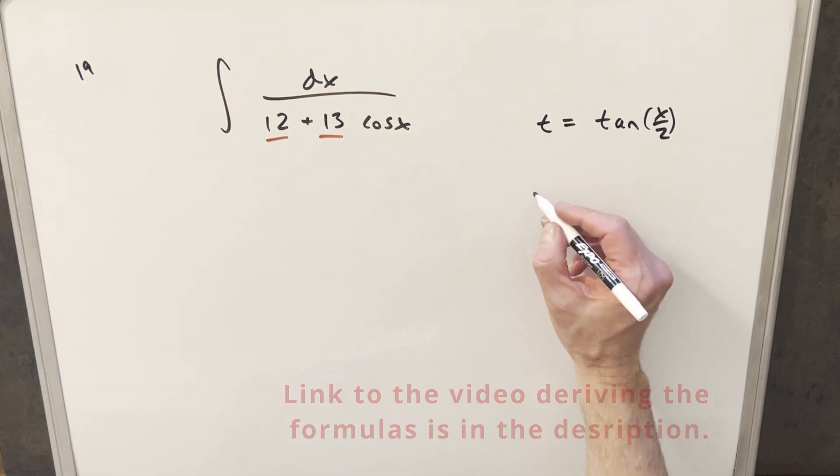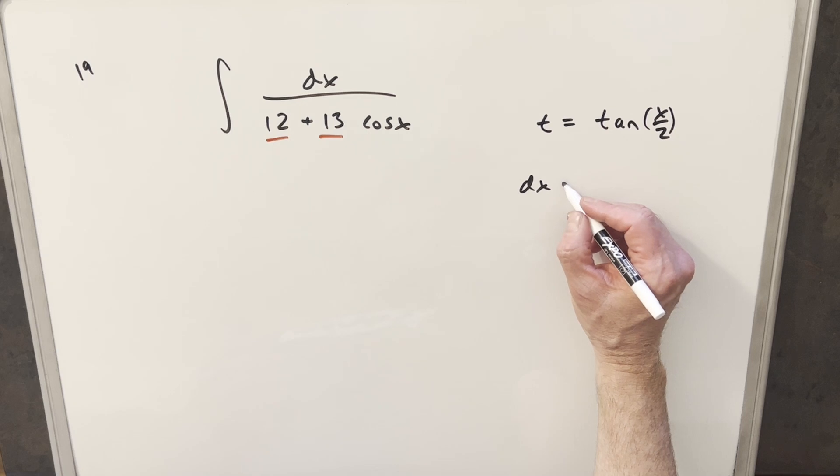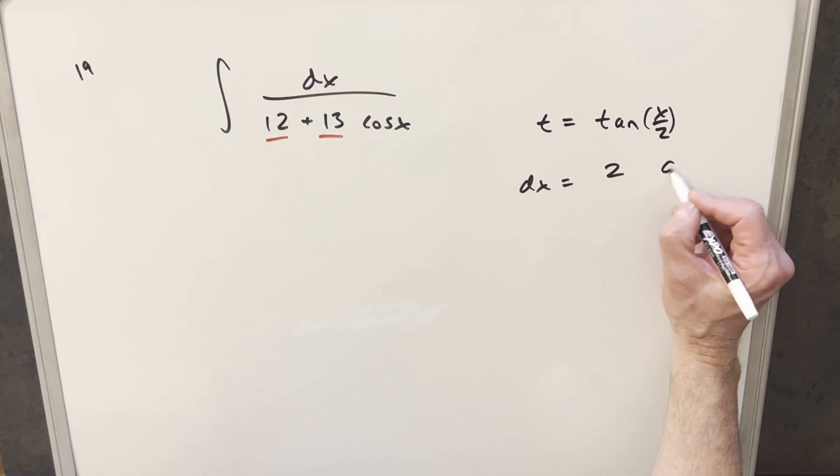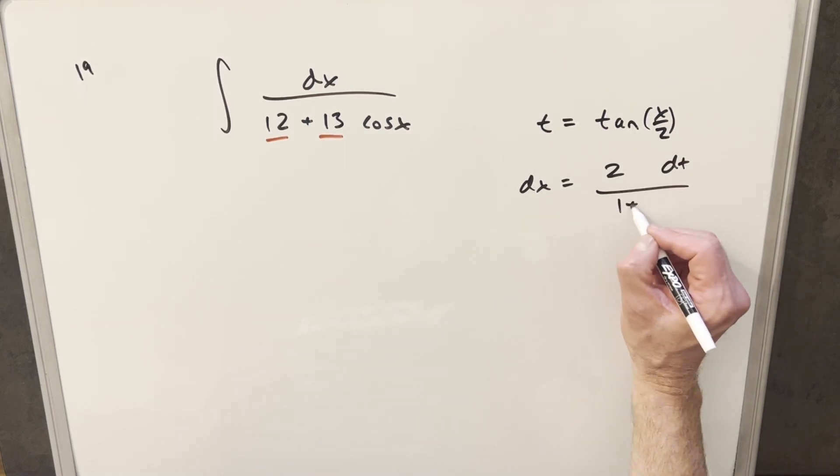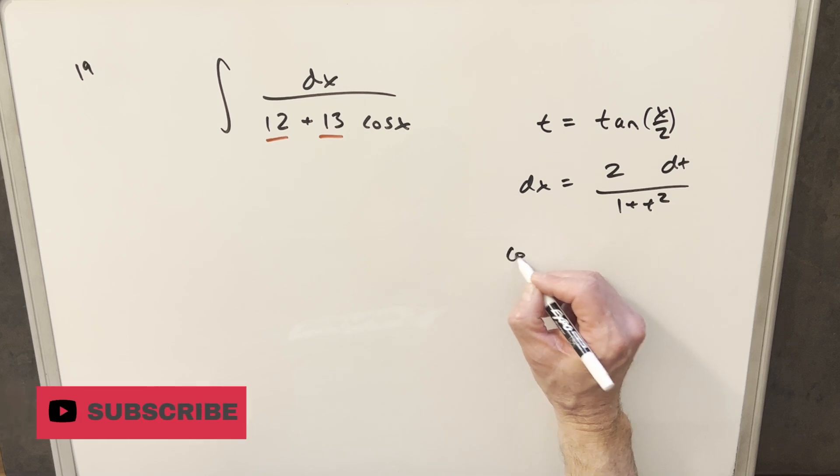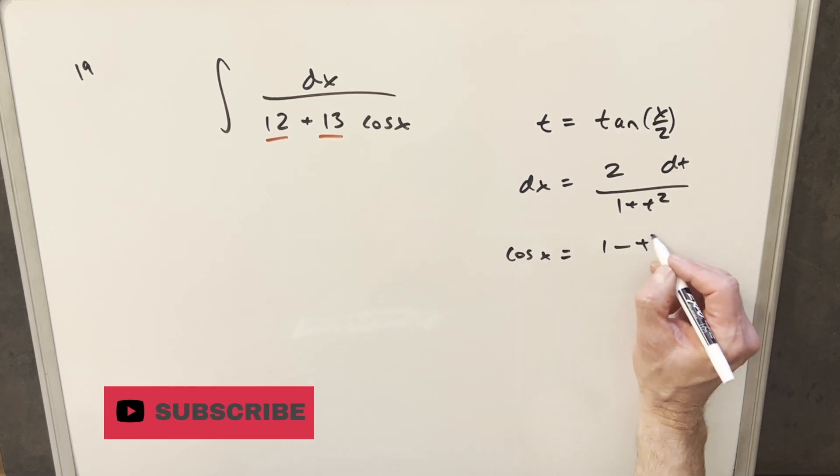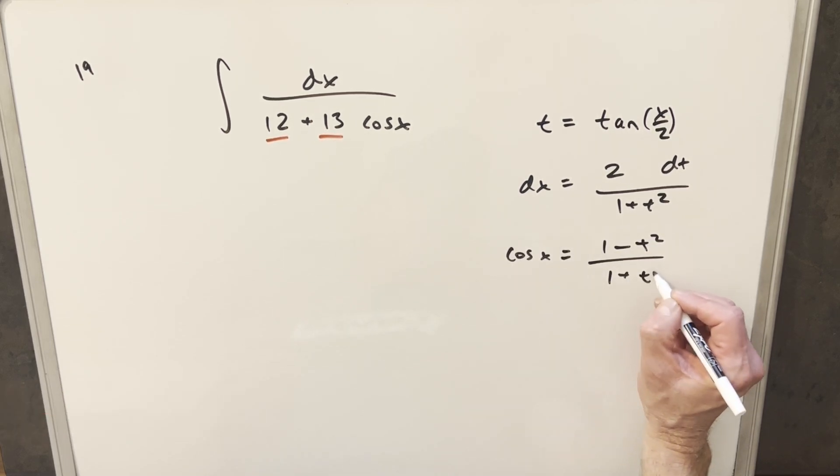So what we found in the previous video was our value for dx is going to be just 2 dt over 1 plus t squared. And for a value for cosine of x, we have 1 minus t squared over 1 plus t squared.